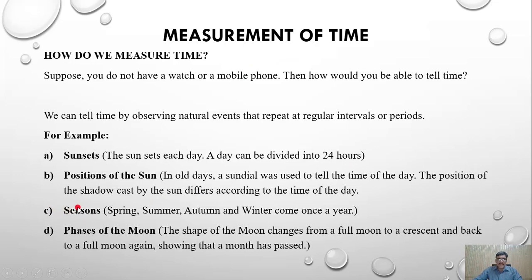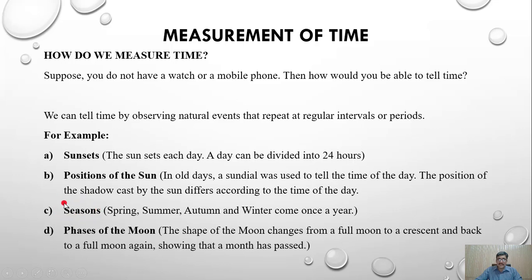The third commonly used natural event is seasons. We have four seasons — spring, summer, autumn, and winter — and they come once a year. In old days, people would note that it is summer, and when the next summer came they would say one year had passed. Similarly with winter — when the next winter came it meant one year had passed. So to measure time in years, people used seasons.